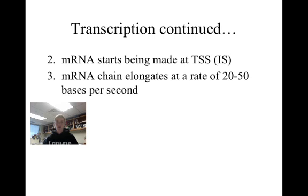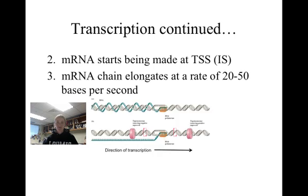The chain of mRNA grows very quickly, as anywhere from 20 to 50 bases are added for each second that transcription occurs. You can see from the diagram that the mRNA gets twisted up in the DNA double helix that is being produced. The enzyme topoisomerase untwists the growing strand of mRNA, as well as alleviating the tension in the DNA strand.